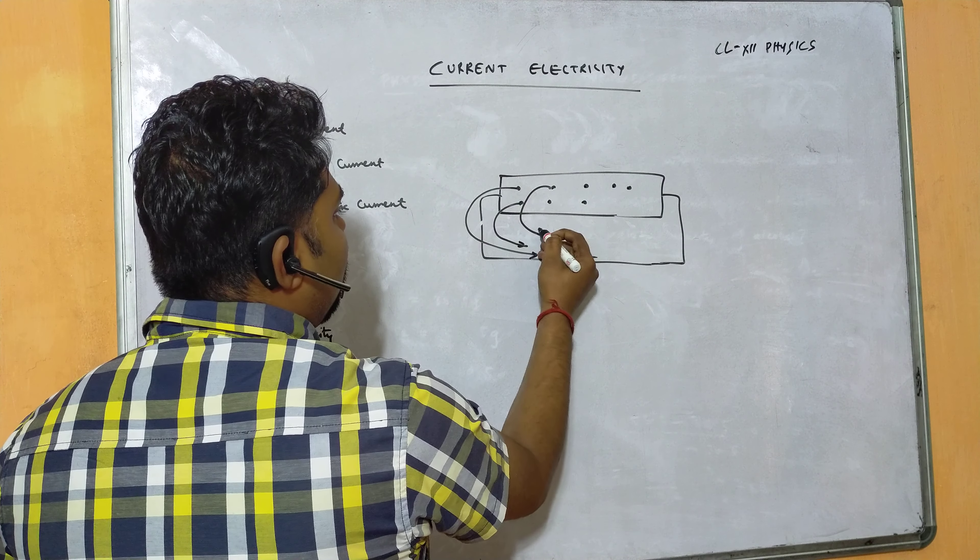In the diagram: steady current gives a flat line, the varying current during capacitor charging decreases over time, and alternating current changes both direction and magnitude periodically. In junior classes we learned only two types — AC and DC — but here we also have varying current as a third type.